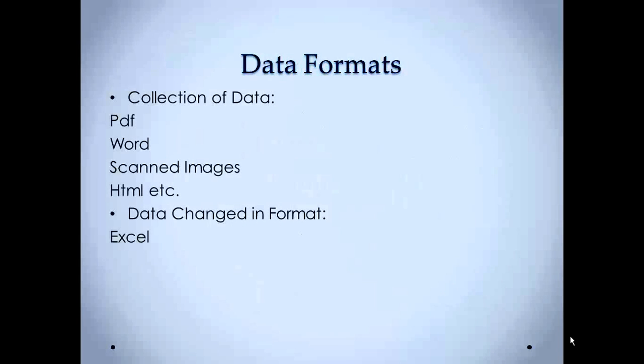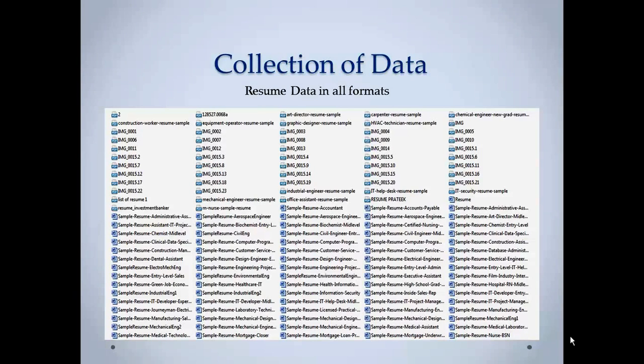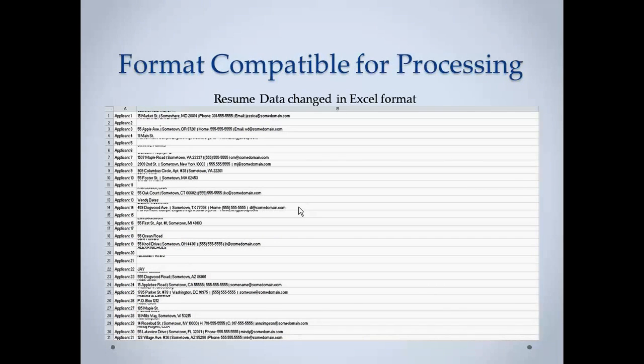Now, the data formats that a company might get will be in a lot of different formats like PDF, Word, scanned images, HTML documents. Those resumes have to be changed into a format of Excel so that it can be more compatible with RapidMiner. The collection of data might be in all formats like scanned images, Word, PDF. Changing that data to a format compatible would lead to more smooth running of the RapidMiner. You can see here, column 1 gives applicant 1 and the resume of that person, applicant 2 and resume of that person.